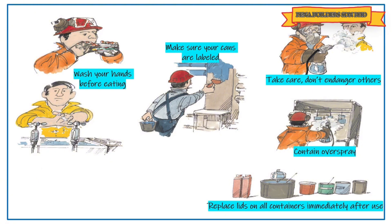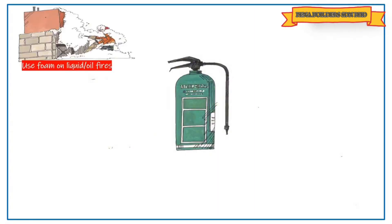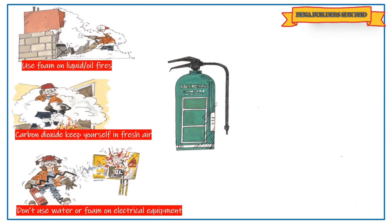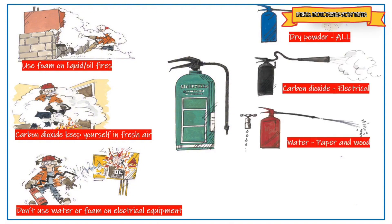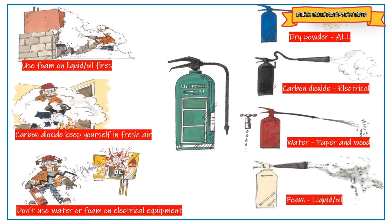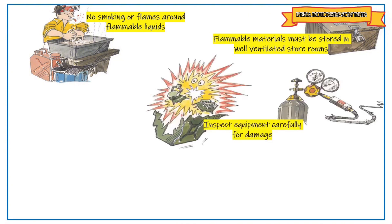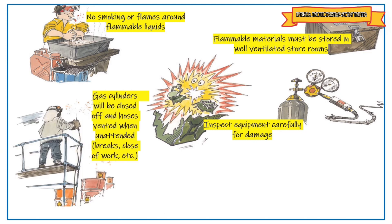Fire safety: use foam on liquid fires. When using carbon dioxide extinguishers, keep yourself in fresh air. Do not use water or foam on electrical equipment. Use dry powder for all fire types, carbon dioxide for electrical fires, water for paper and wood fires, and foam for liquid or oil fires. No smoking or flames around flammable liquids. Flammable materials must be stored in well-ventilated areas. Inspect equipment carefully for damage. Gas cylinders must be stored upright and secured with chains. Gas cylinders must be closed off and hoses vented when unattended, such as during breaks.